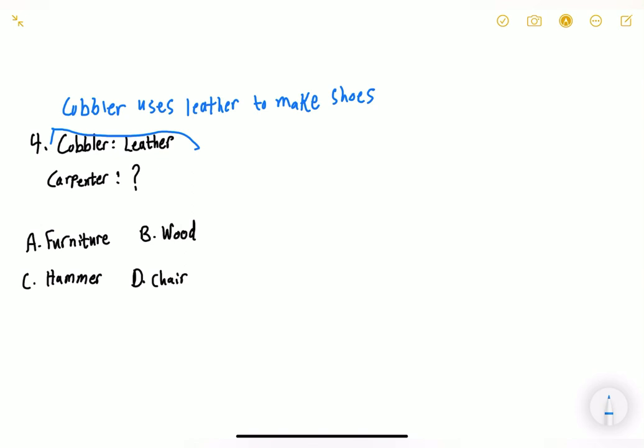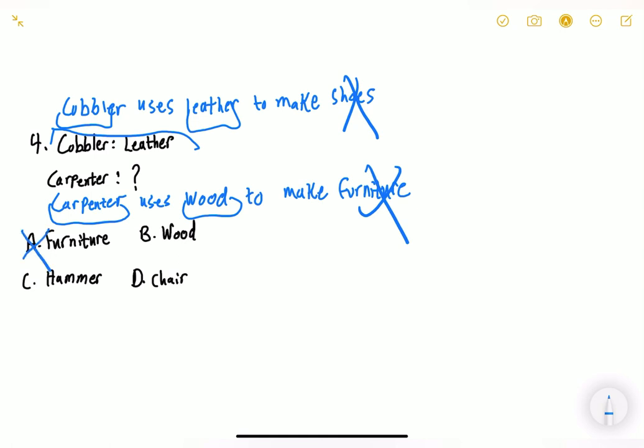So that means a carpenter uses wood to make furniture. So we identified that it's cobbler and leather, meaning it has nothing to do with the shoes. So we're supposed to identify that it's carpenter and wood has nothing to do with furniture. And you might be tricked into choosing furniture, but it's not furniture. We know automatically to cross these two out and then we would be left with furniture and wood. And the correct answer is wood because that's what a carpenter uses to make furniture. They're not asking what are they making. They're asking the relationship between what they use. So the answer is B.